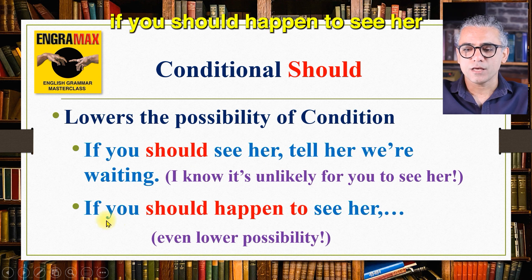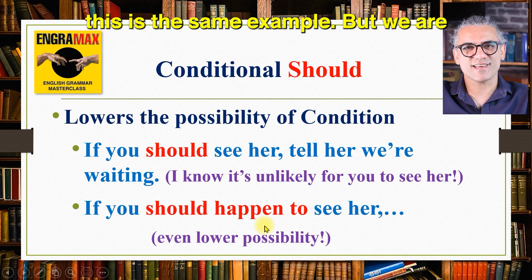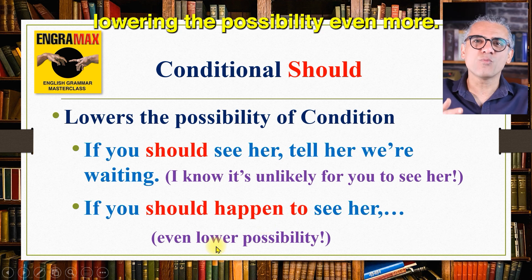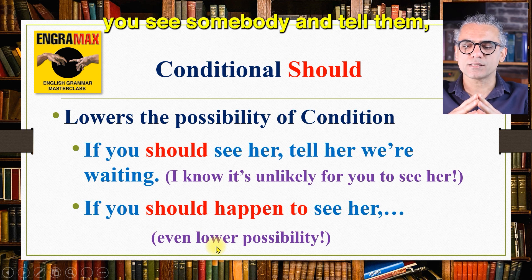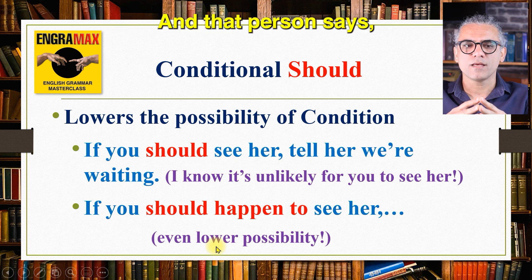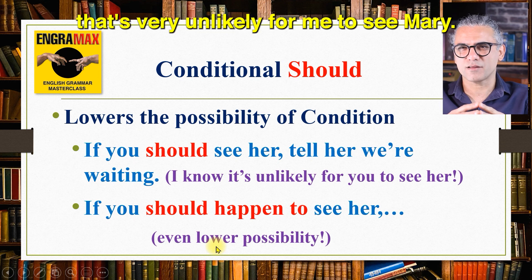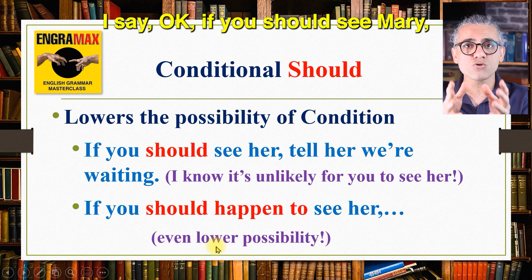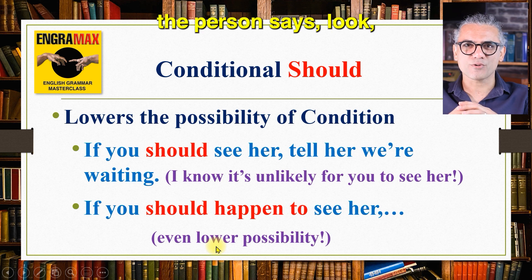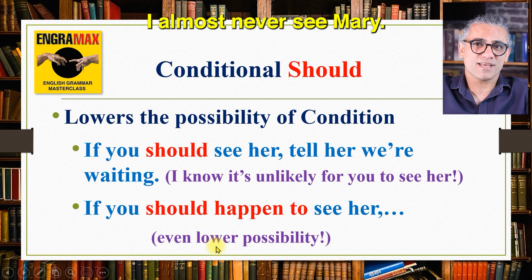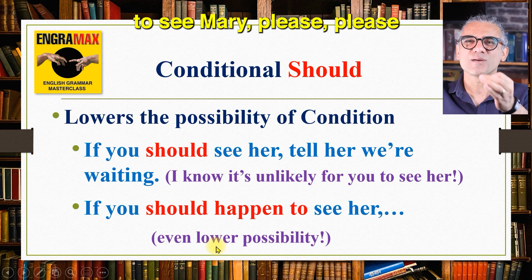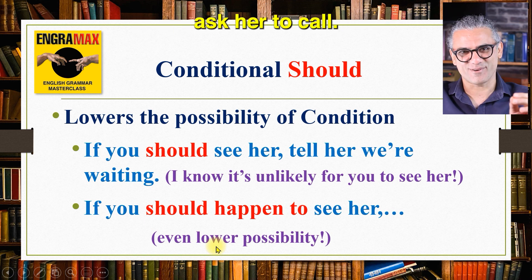Another example: if you should happen to see her. This is the same idea but lowering the possibility even more. For instance, you tell someone: if you see Mary, please tell her to call me. They say it's unlikely. So you say: if you should see Mary, please tell her to call me. They say they almost never see Mary. So you say: if you should happen to see Mary, please ask her to call.